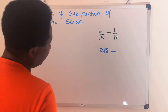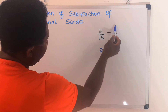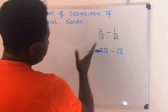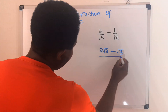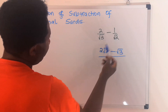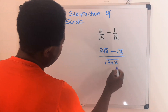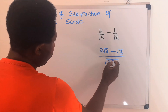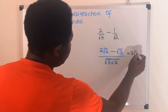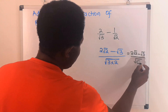Next, we are going to bring down this minus. The square root of 3 multiplied by 1 gives us the square root of 3 — that is, we have moved towards the right. For the denominator, the square root of 3 multiplied by the square root of 2 gives us the square root of 6 — both are inside this square root. So we have 2 root 2 minus the square root of 3, divided by the square root of 6.